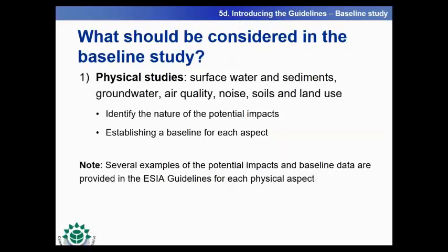The baseline investigation should consider all aspects of the environment that may be changed by the proposed project. These can be classified as physical, biological, and socioeconomic attributes. Regarding physical studies — such as surface water and sediments, groundwater, air quality, noise and vibration, landscape, soil, and land use — it's necessary to identify the nature of potential impacts and establish a baseline for each aspect. Not all aspects are relevant for each site; you have to select relevant aspects according to the proposed project. The guidelines provide several examples of potential impacts and baseline data that should be collected for a new cement development facility for each physical aspect.